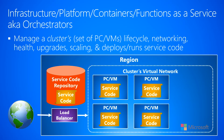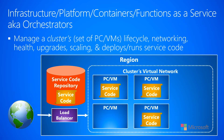A client request comes in and typically goes to a load balancer. The load balancer then directs the traffic to one of the PCs or VMs that's part of your cluster. Your service code gets that request, does some processing, and ultimately sends a reply back. Now, what I just showed here was your code crashing. So there in the bottom left corner is your code running on a VM, but let's say your code gets an unhandled exception and crashes. The job of the orchestrator is to detect that automatically and execute some operation to bring your code back up.